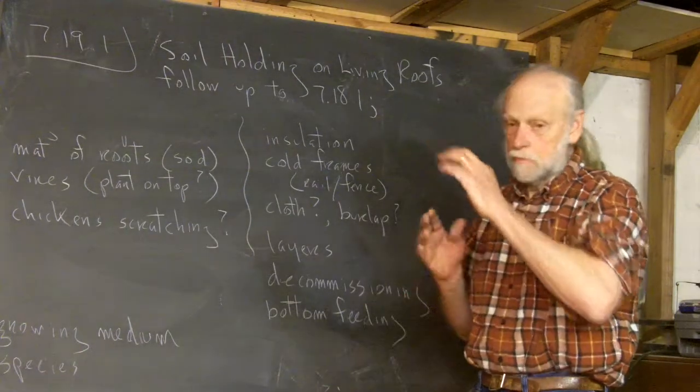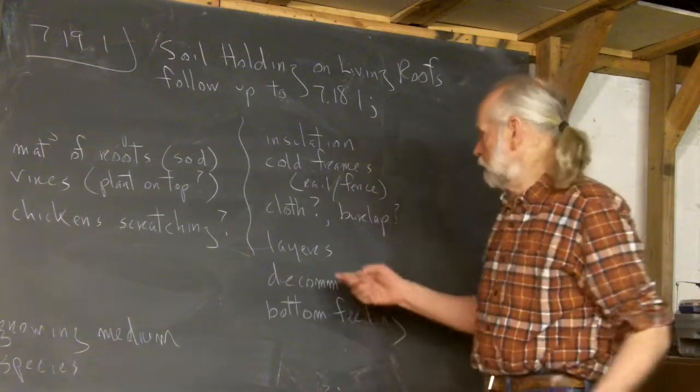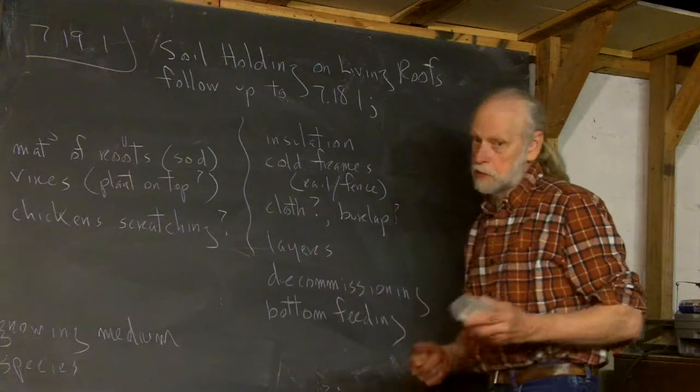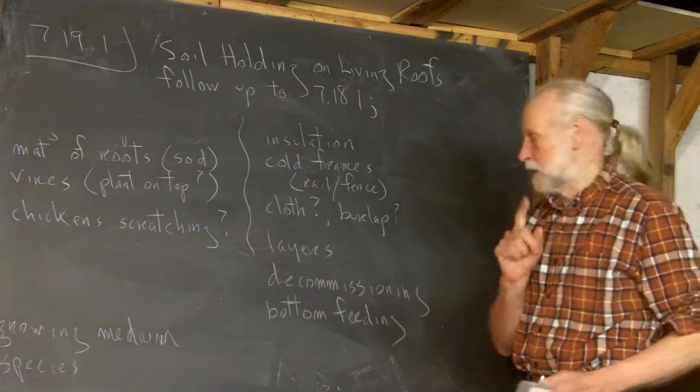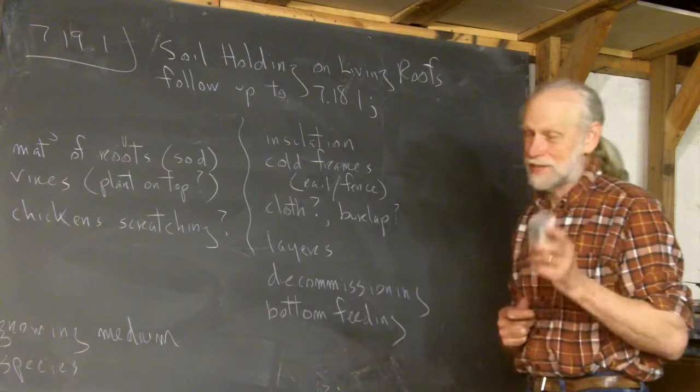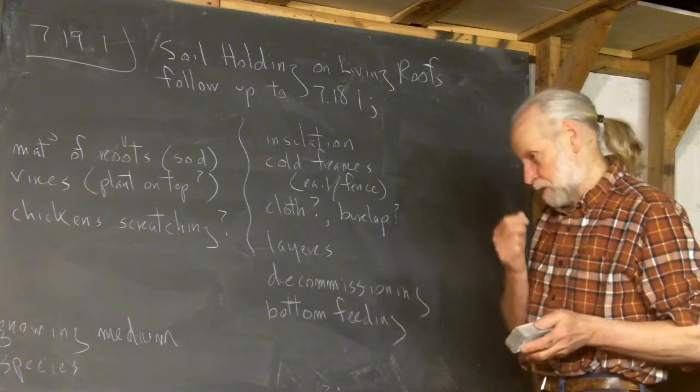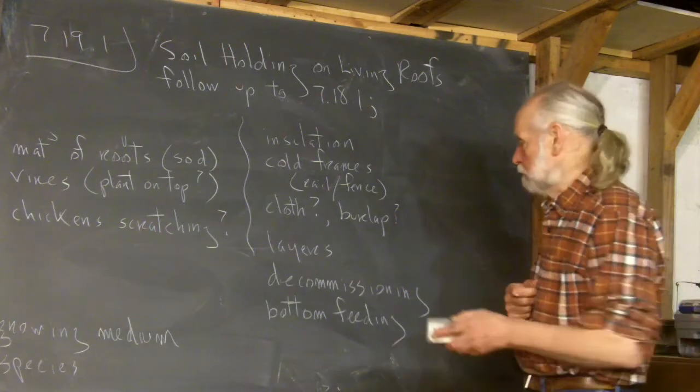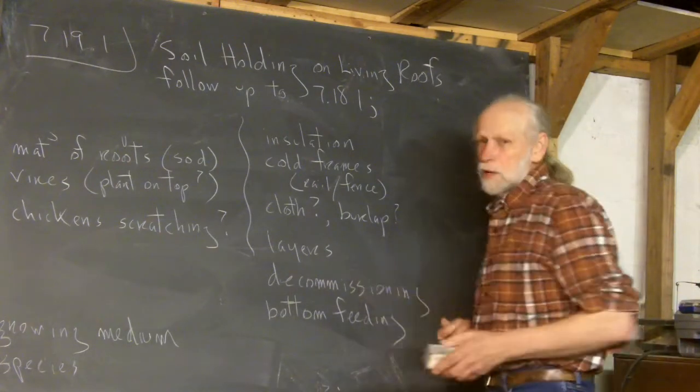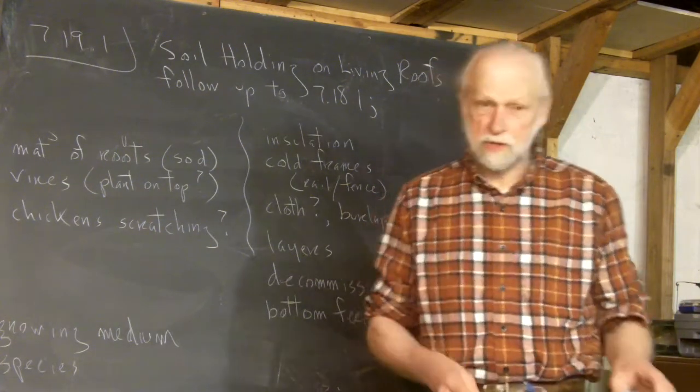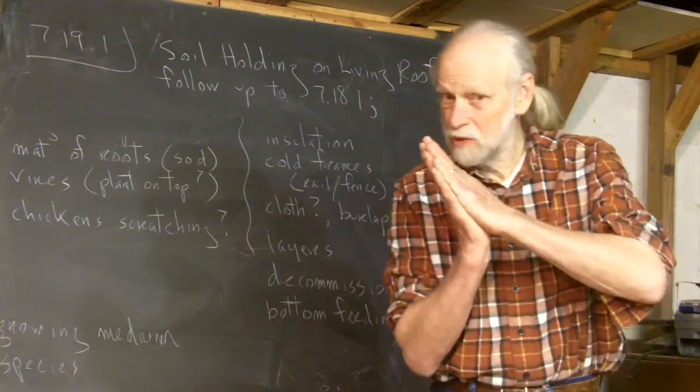So there's the impermeable layer. Now, that layer, it could be various layers, I suppose. It doesn't have to be just one, but you've got to have one that you can count on it. And that's why I was using that example of bunker cover.